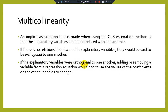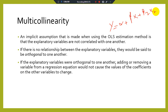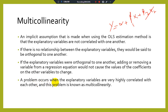If the explanatory variables are orthogonal to one another, adding or removing a variable from a regression equation would not cause the values of the coefficients on the other variables to change. For example, in a model y = α + β₁x₁ + β₂x₂, if the variables are orthogonal, removing x₂ or x₁ would not normally change β₁ or β₂. If the coefficients do change, there may be an issue of multicollinearity.